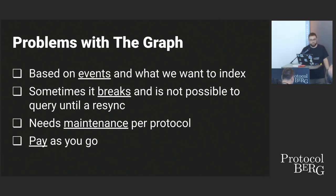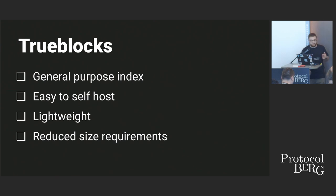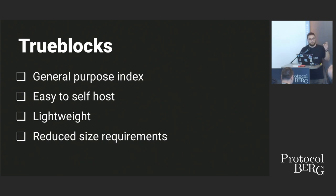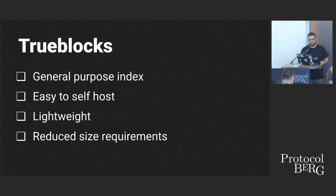The problem with Etherscan is that it's a Web2 service with rate limits and quotas. It's not relaying on your own node — it's connected to their own services. If you want to do big blockchain analysis, it's not really useful. TrueBlocks is the solution our team likes the most. It's a general purpose indexer that allows you to query any address and find all appearances. It goes beyond Etherscan by analyzing the whole data the node provides, including addresses embedded in transaction data.